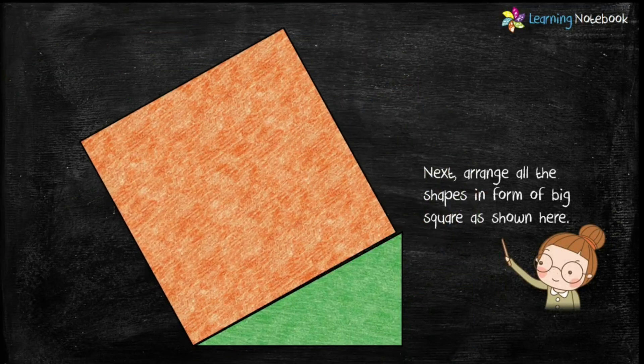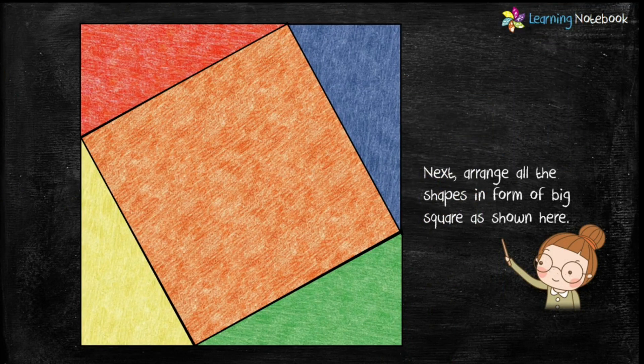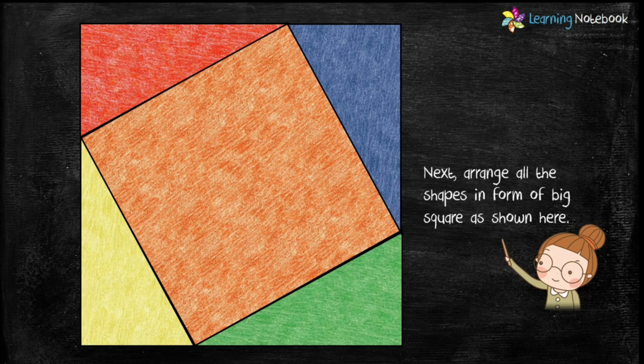Next, arrange all these shapes in the form of a big square as shown here. Students, can you tell what is the length of the side of this big square? Yes, it is a + b.